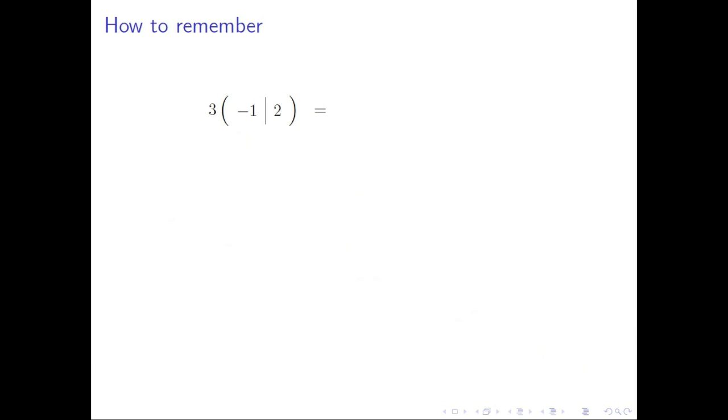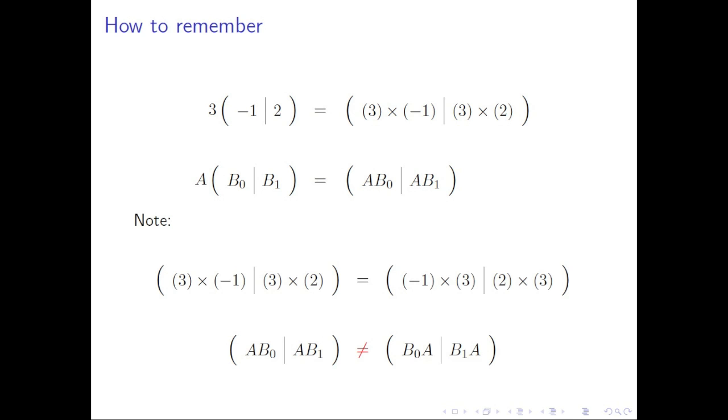Here is how I remember how to perform this partitioned matrix-matrix multiplication. I start by remembering how to multiply a scalar, 3, times a row vector with two components. In the partitioned matrix-matrix multiplication, the scalar 3 is replaced by A, and the components of the row vector by B0 and B1. You then mimic how you would scale the row vector with the symbols. The thing to keep in mind is that matrix multiplication does not commute, except in special cases.